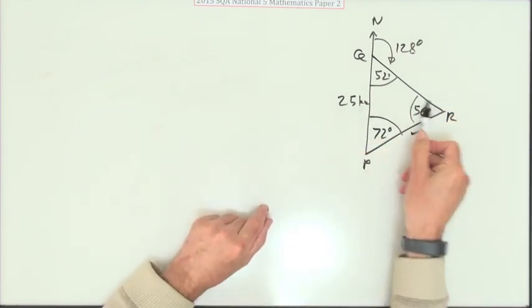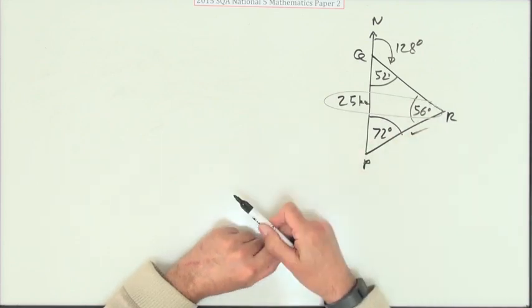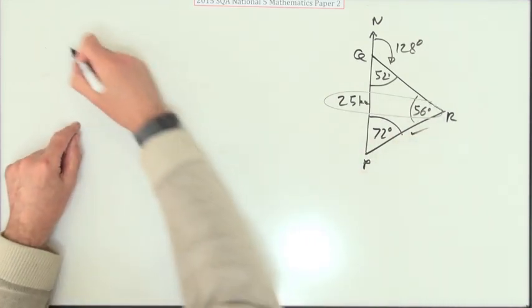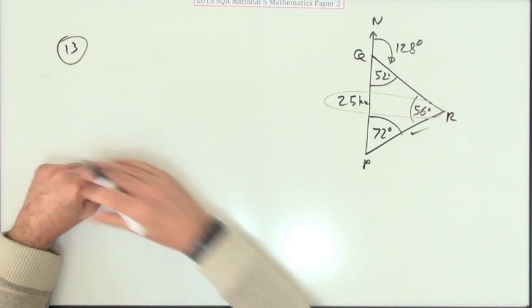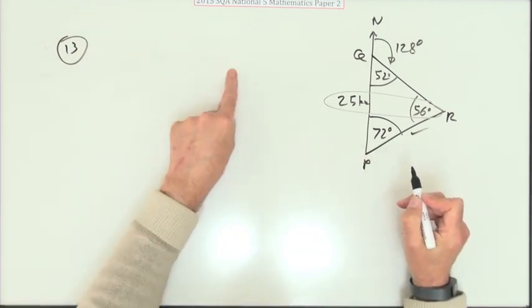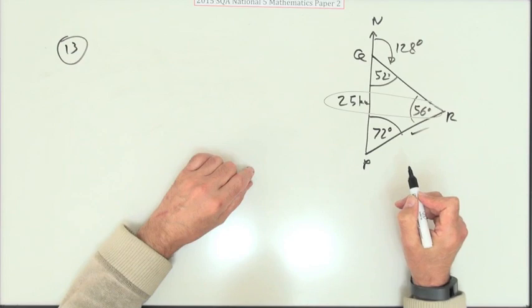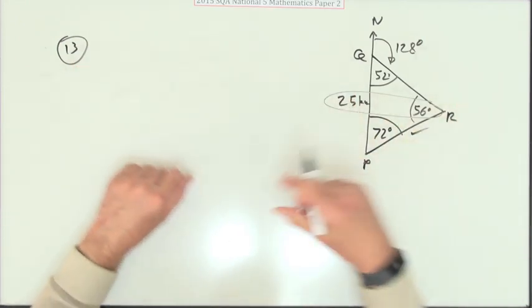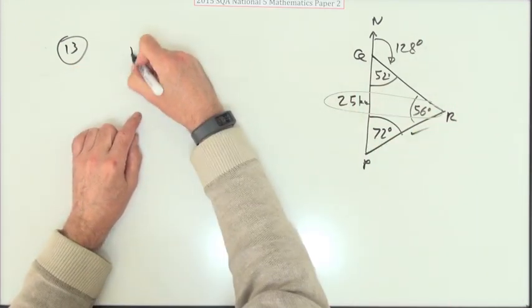Now I can use the sine rule. There's an opposite pair. So if I want PR, I can say this. I mean put the question down. Question 13. You can write the sine rule out if you like. A over sine A etc. In inverted commas because these are P's and Q's and R's. But you can just jump straight in. That's what I do.